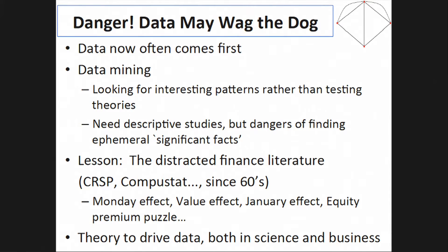Big data came along in the 1960s in finance and distracted the scientific literature for quite a while — the Monday effect, the value effect, the January effect, the equity premium puzzle — a whole series of empirical curiosities and anomalies that weren't really deep scientific questions and distracted the literature. So you want to make sure we don't get stuck on 'this is really interesting' without asking what we should really be looking for.